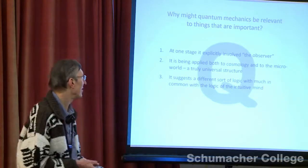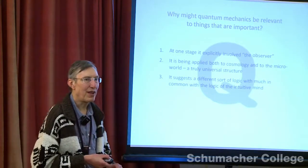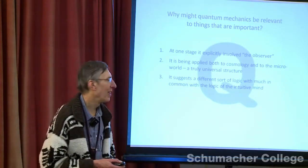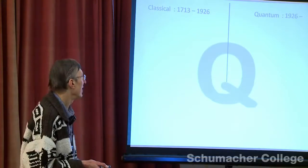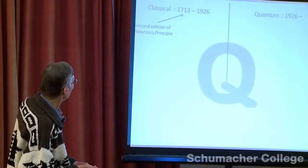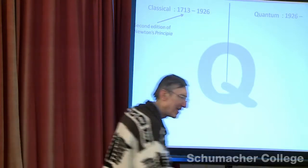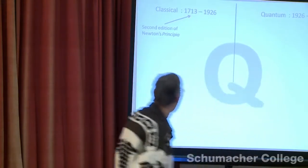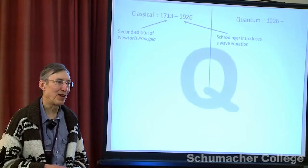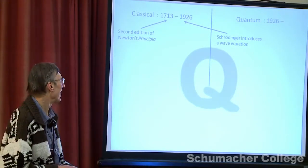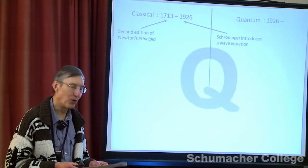The easiest approach is to compare quantum theory with the theory that came before it. I am going to compare classical theory to quantum theory. The start of classical theory is the publication of Newton's Principia, and at the other end I have taken 1926 as the point where Schrödinger's wave equation entered the scene — the shift point between when people were thinking classically and when they were thinking in a more quantum theoretical way.